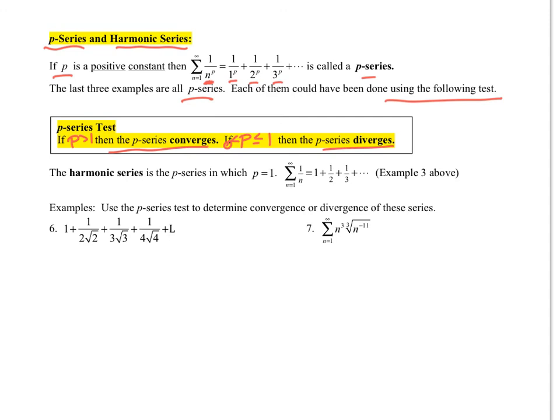If we look at number 6, I have this. If I rewrite this, this looks like 2 to the 3 halves, because it's 2 to the first times 2 to the 1 half. Add exponents, 2 to the 3 halves. So I get 1 plus 1 over 2 to the 3 halves plus 1 over 3 to the 3 halves plus 1 over 4 to the 3 halves.